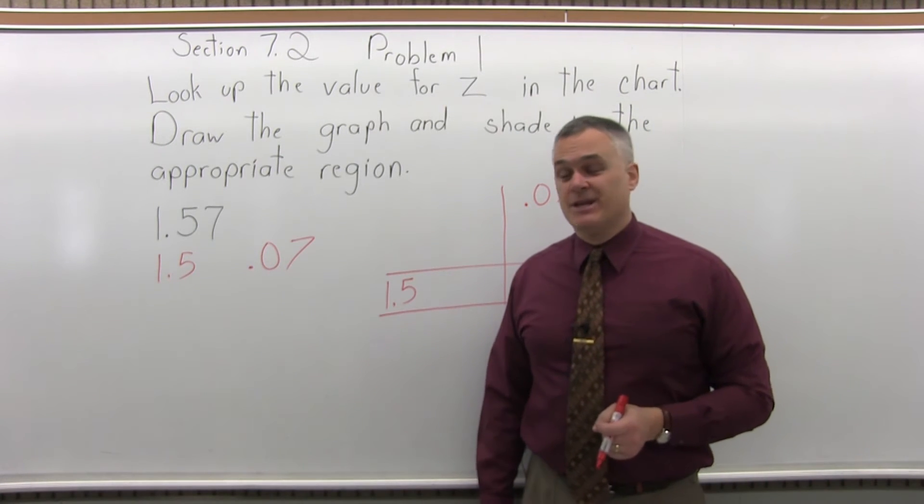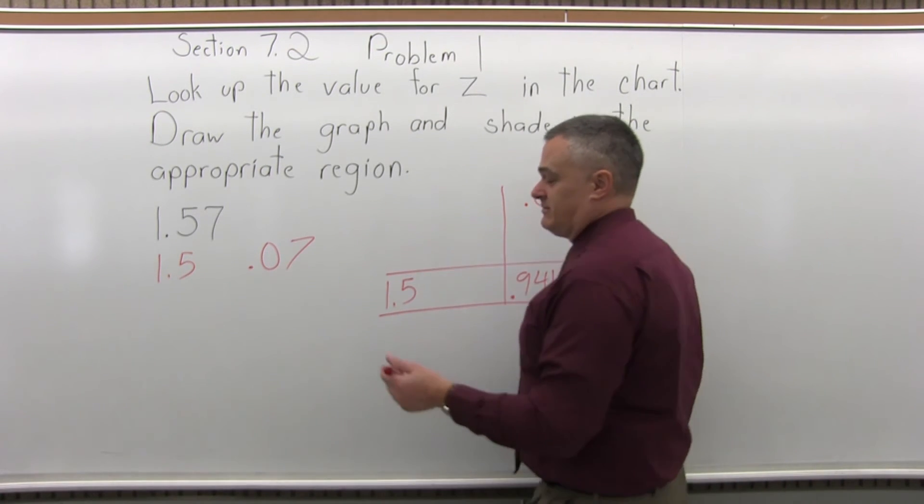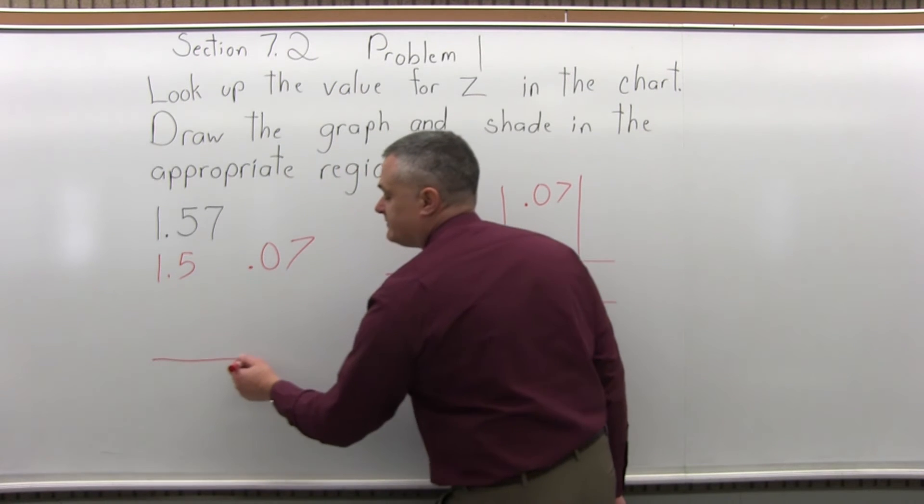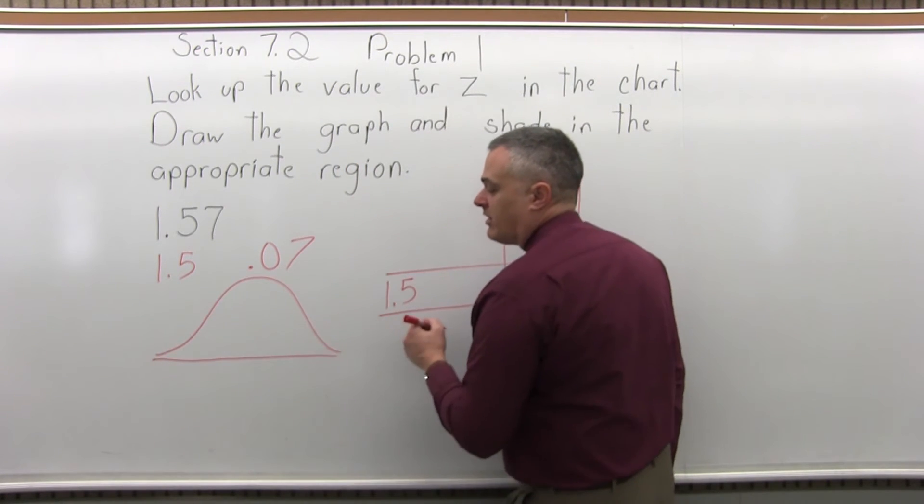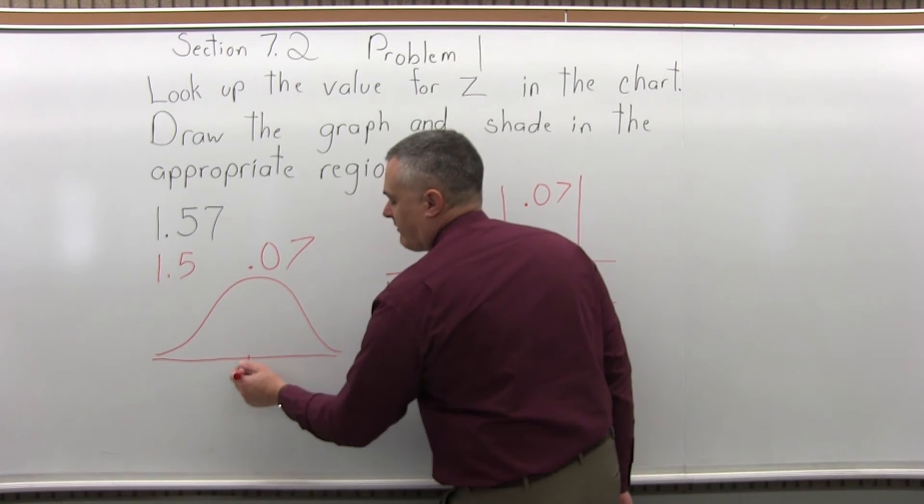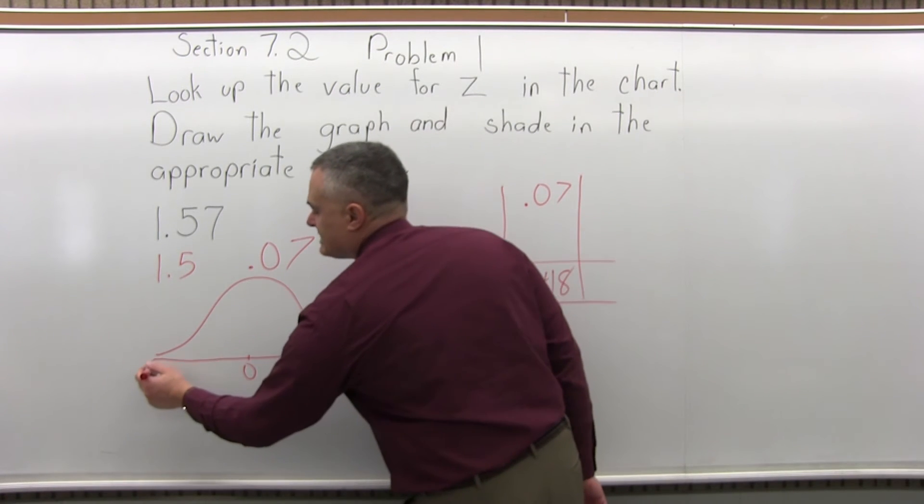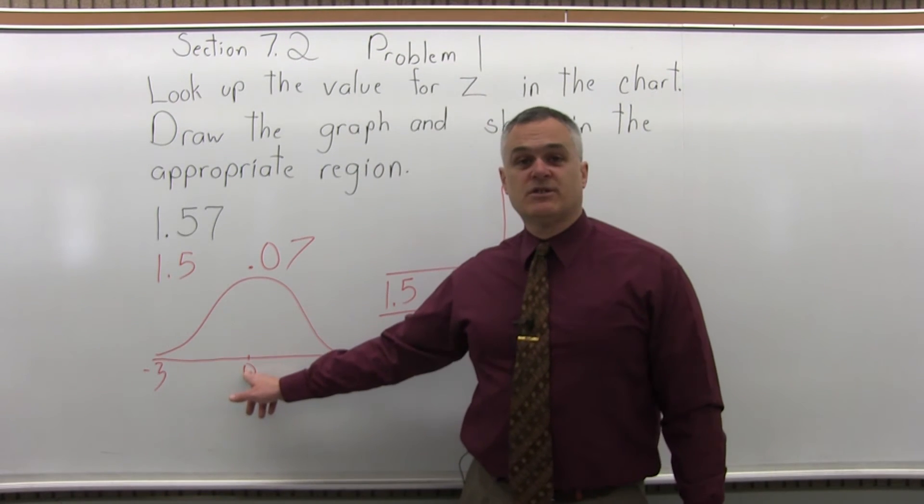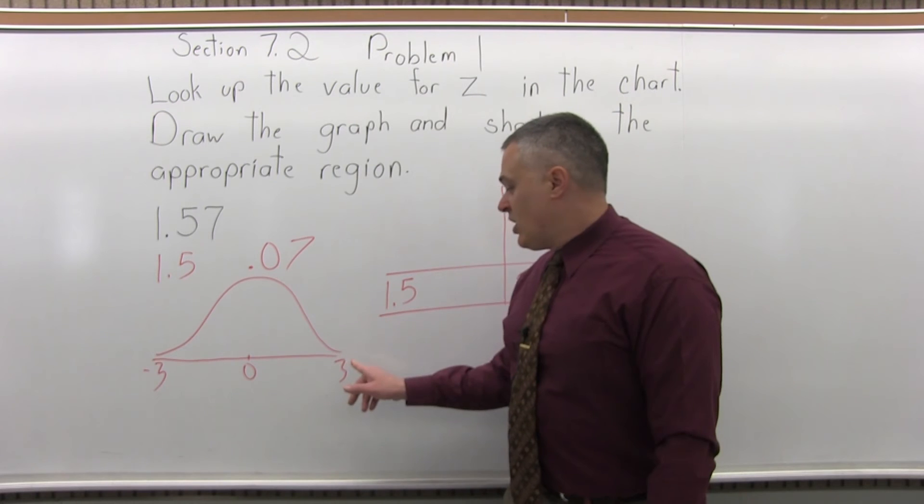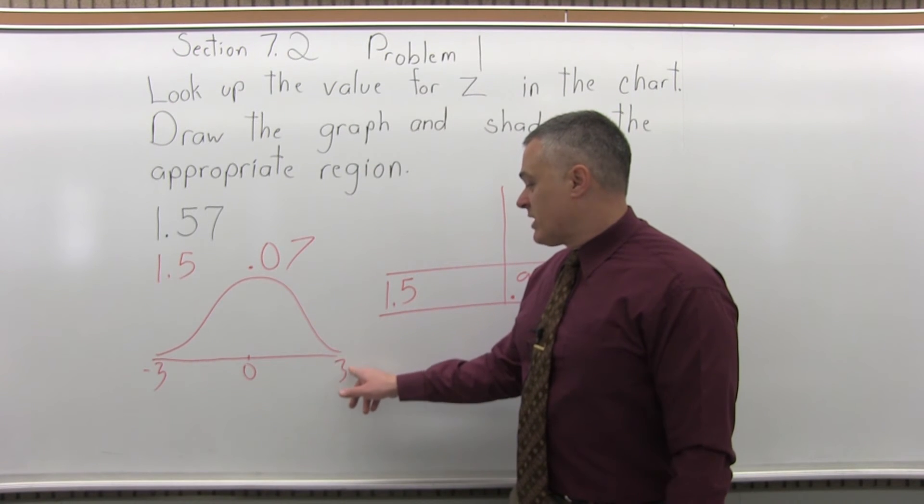Now, what exactly does that mean? What is .9418? Well, when you draw the graph, this is normal probability, so you have a bell curve. And what you have on the bottom are how many standard deviations away from the average you have. So right in the center is zero standard deviations away from the average.